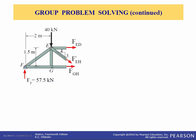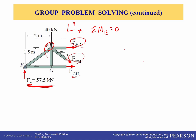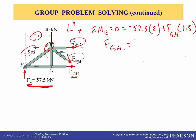We're going to analyze the left section — here's the free body diagram. Summing moments about point E eliminates F sub EH and F sub KD, so we can solve directly for F sub GH. Summation of moments about E equals zero: the reaction force 57.5 kN wants to rotate clockwise, so it's negative — minus 57.5 times 2 meters. The moment due to F sub GH wants to rotate counterclockwise, so it's positive — plus F sub GH times 1.5. Solving, F sub GH comes out to positive 76.7 kN — in tension.